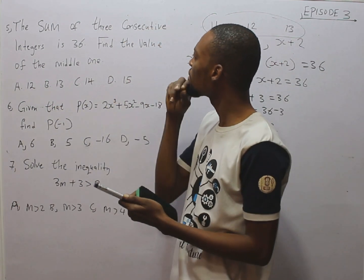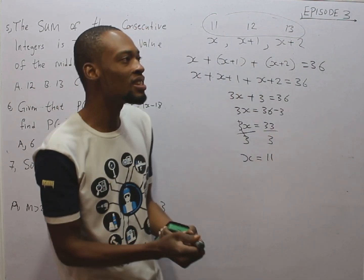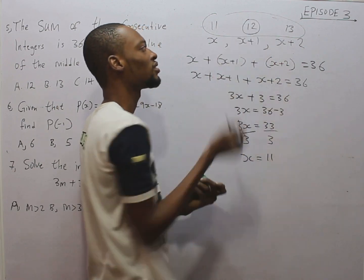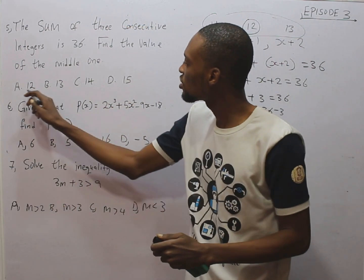The question says, find the value of the middle one. So, given this and this, which one is in the middle? This is the median. So, median number is 12. We simply say, 12.